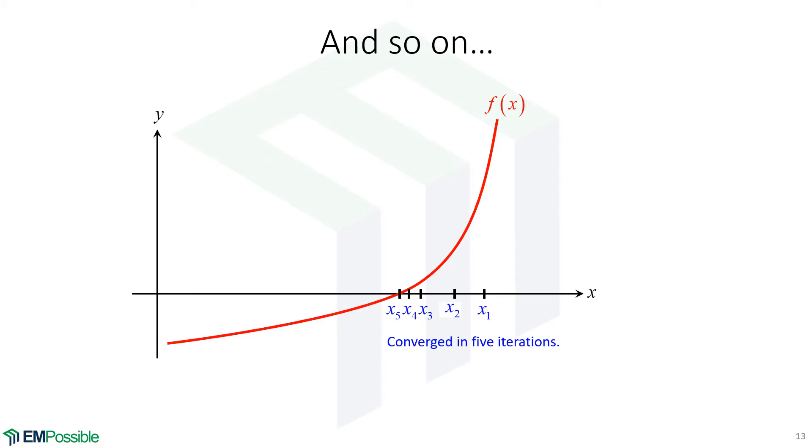This continues: evaluate the function, get the next, get the next, get the next. We will slowly close in on where that root is. In this case we've converged in five iterations. If we need six digits of precision, that might go a dozen or so iterations.